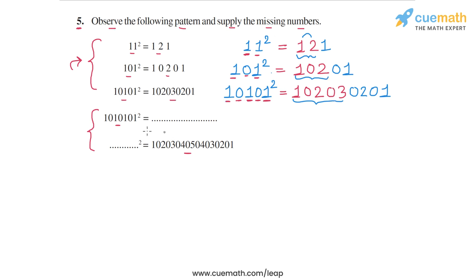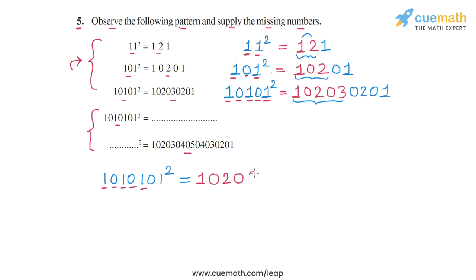We can apply this same pattern thinking to the remaining two parts. For 1010101²: the first 1 gives 1, zero gives 0, second 1 gives 2, zero gives 0, third 1 gives 3, zero gives 0, and the fourth 1 gives 4. Completing symmetrically, we append 0302010 — giving us 1010101² = 1020304030201.